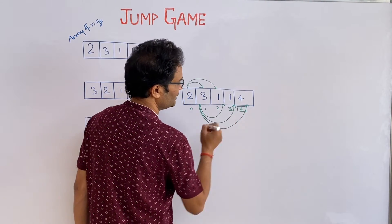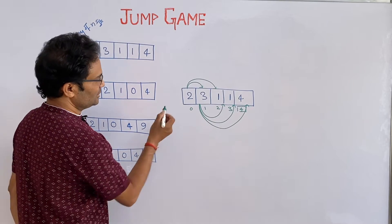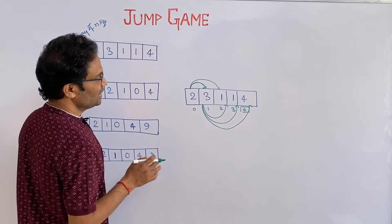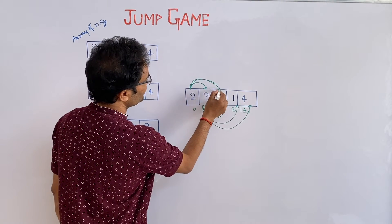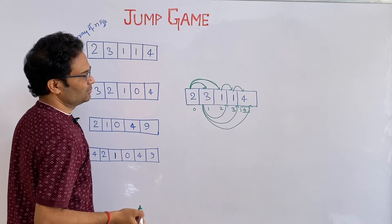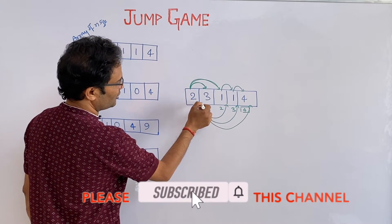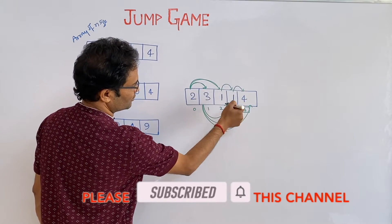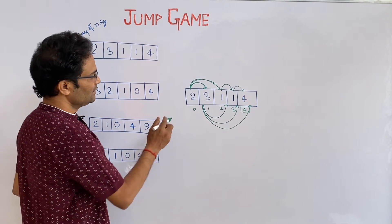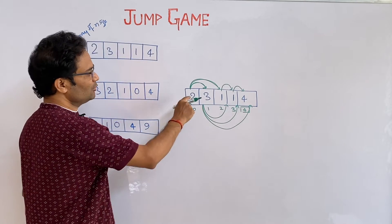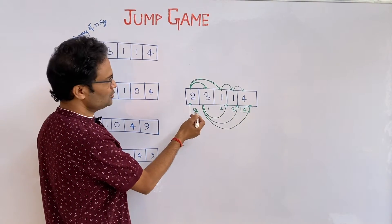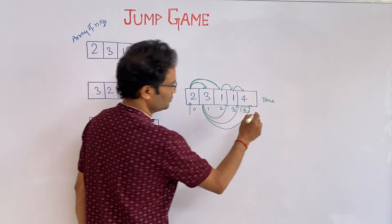The last index value is 4. In this case we have many possibilities. Either we can jump from index 0 with value 2 to some node and from there jump to the final node — in two steps we can reach it. Another way: from here you can jump 1, then 1 again, then 1 more. Or jump from 3 and go 1 to another 1, then reach 4. So we would be able to reach the target and we return true.